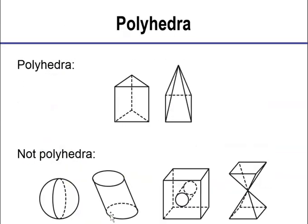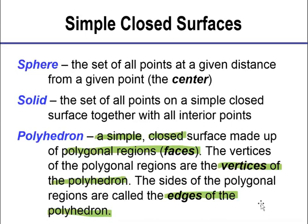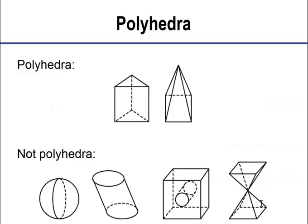We have polyhedra — the plural of polyhedron. Why are these two considered polyhedra, and these four are not? Going back to our definition: it's got to be simple, closed, and have polygonal faces. When you look at these two, they're both simple and closed — they don't cross over themselves, and if you were to trace them out you would start where you left off. Why is the sphere not considered a polyhedron? Because it doesn't have polygonal faces. Same thing with this cylinder. The one with a hole in it is not closed, and the other is not simple because it crosses over itself. These two are polyhedra because they're simple, closed, and have polygon faces.